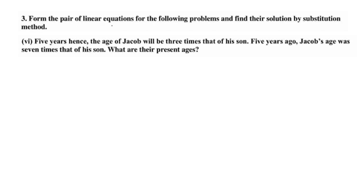Form the pair of linear equations for the following problem and find their solution by substitution method. 5 years hence, the age of Jacob will be 3 times that of his son. 5 years ago, Jacob's age was 7 times that of his son.